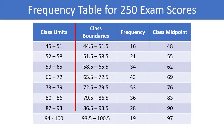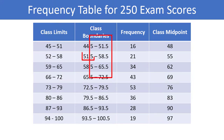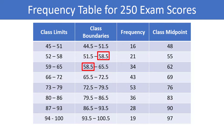The class boundaries are values right between each class. So the first two classes share a boundary of 51.5, the second and third share a boundary of 58.5, and so on. Some frequency tables have even more columns than what we are showing here, and we will show you some of the additional columns as we work through an example shortly.